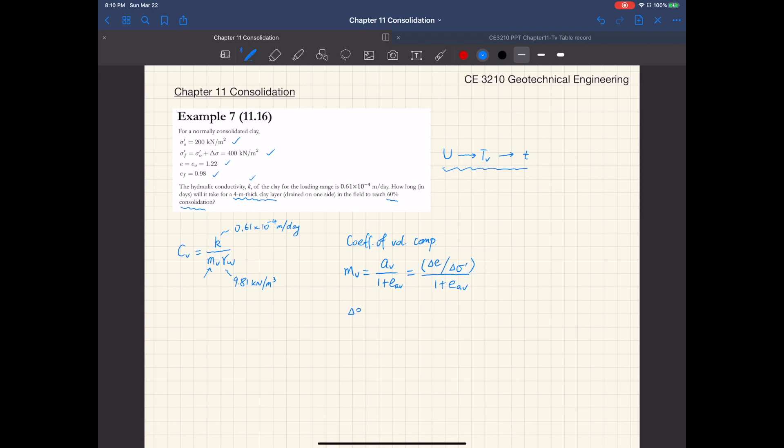So from the lab consolidation test, delta E is E0 minus EF, which is 1.22 minus 0.98, this is 0.24. And delta sigma prime is the same as delta sigma, which is 400 minus 200, this is 200 kilonewtons per meter squared.